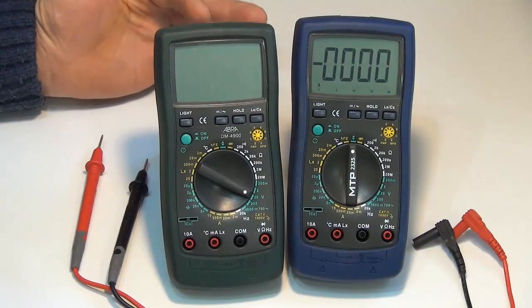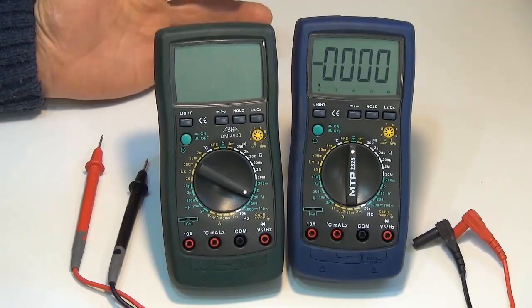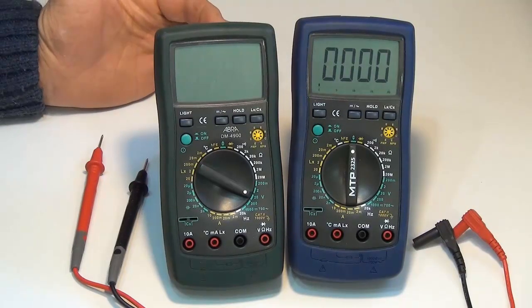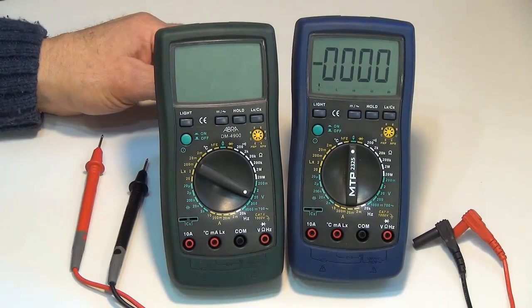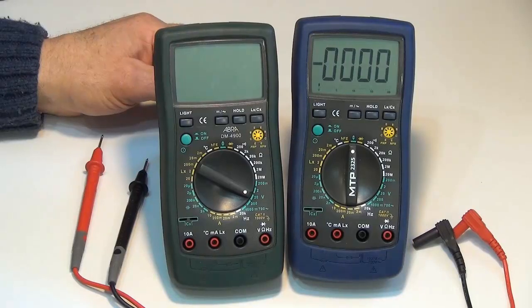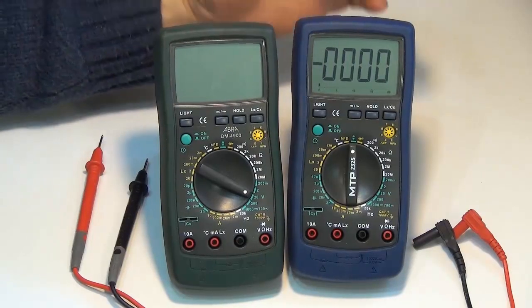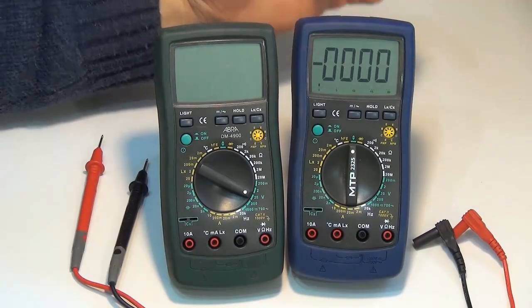Look at that, the display is outright disappearing on us. So the battery is dead on this particular meter. So we can't make any obvious measurements with this one. So that's the first thing that we're looking for to make sure that the battery in your digital multimeter is in proper working order.